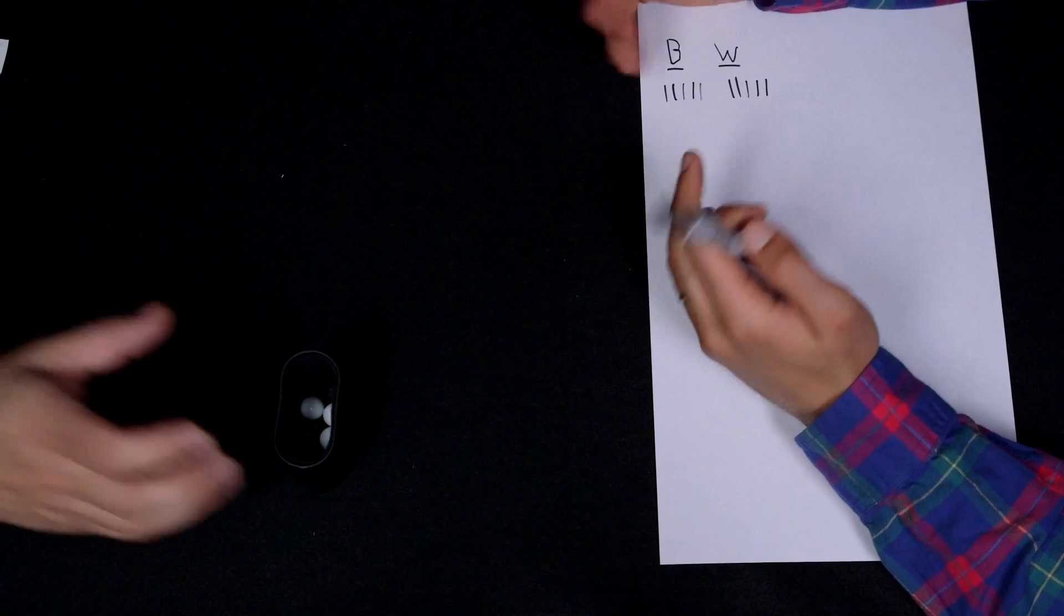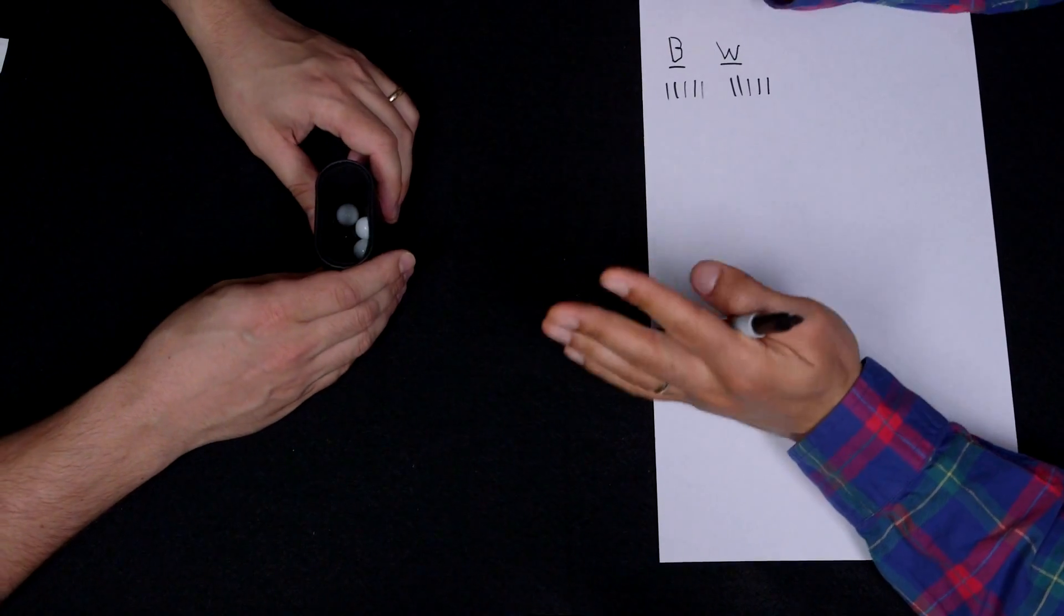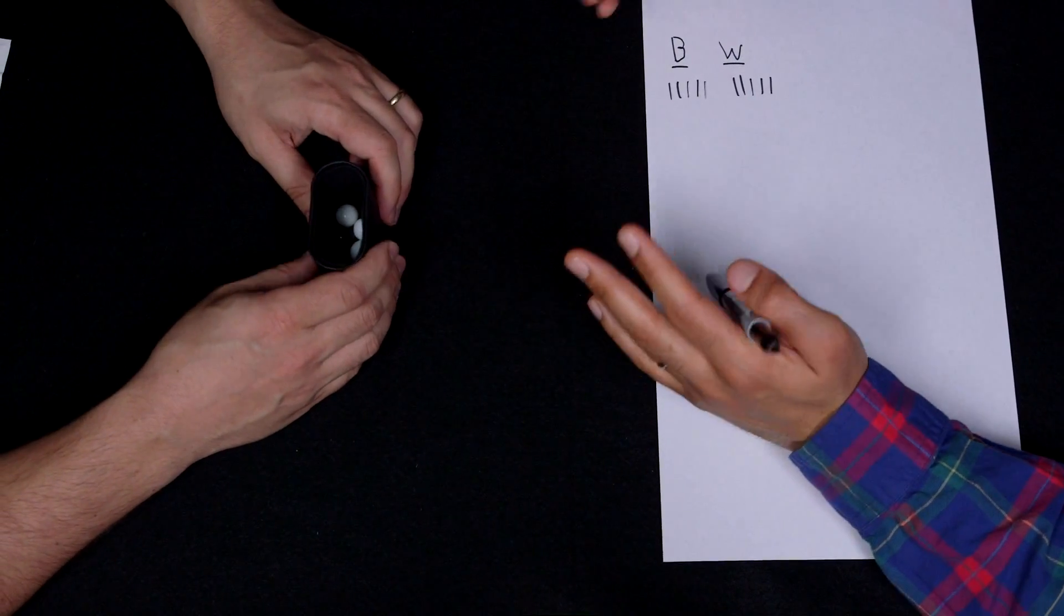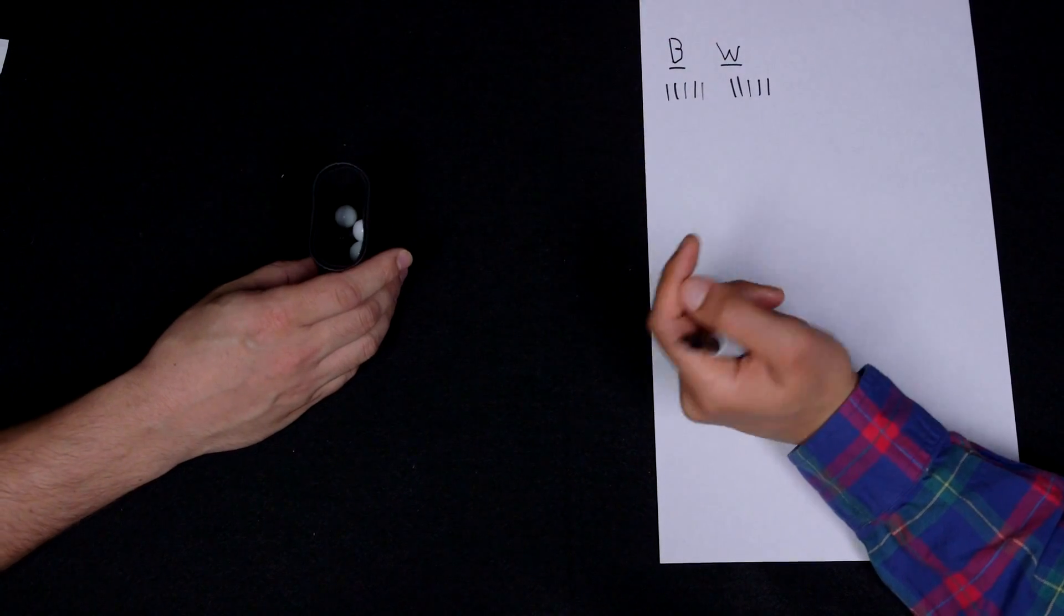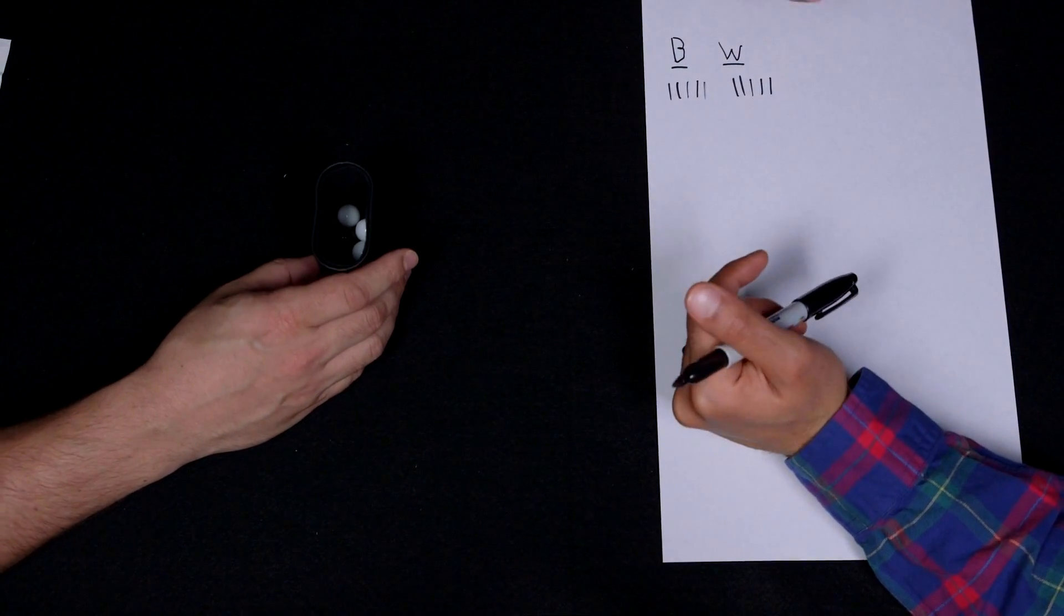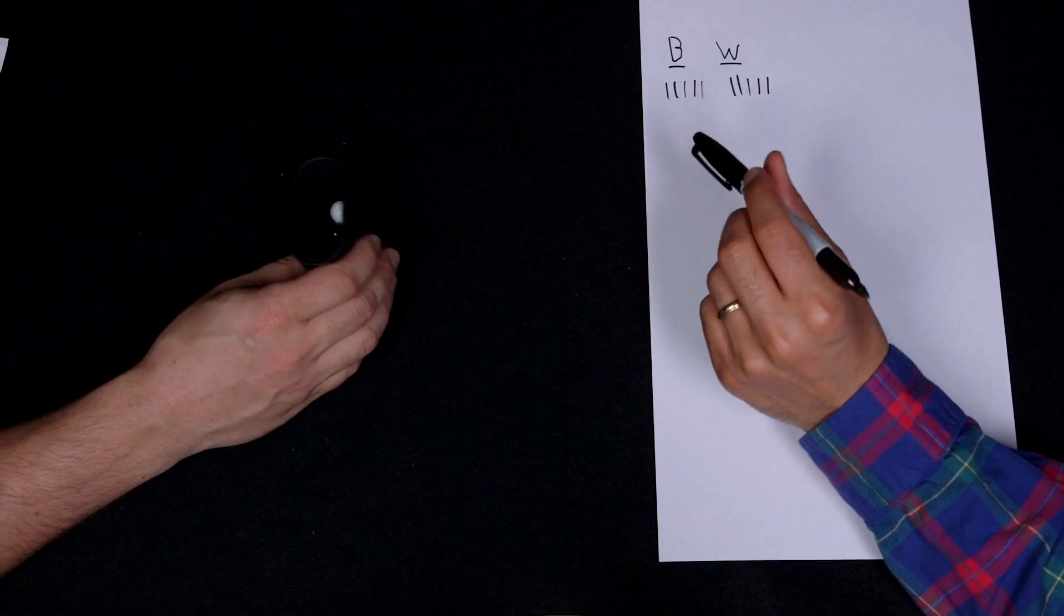So once again, I wouldn't bet my life savings on this because once again, this might have been just the way I happened to pick it. But if I had to guess, I would say that you have an equal number of white and black.